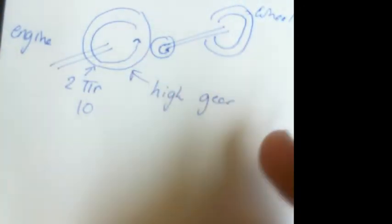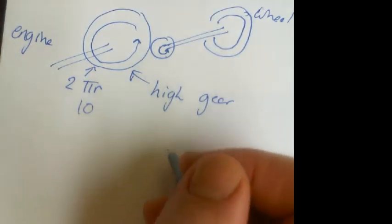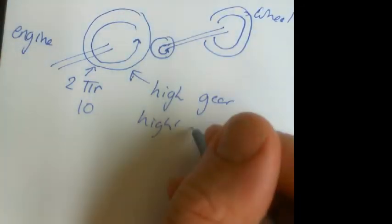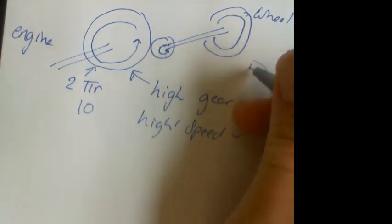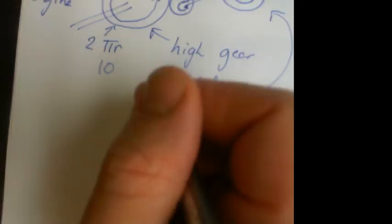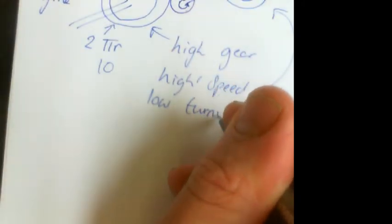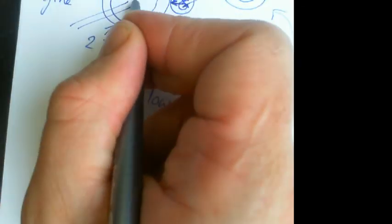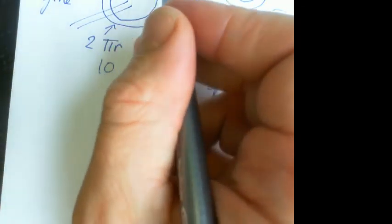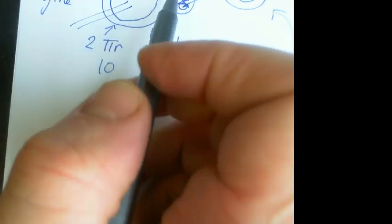In high gear you have a high speed, because the wheels go around fast. But you have a low turning effect, and that's because the distance from the pivot here — the radius — is smaller. This radius is much bigger than this radius. Force times distance: you're applying your force at the distance from the shaft, so the big cog has a bigger turning effect, while the small cog applies force at a much smaller distance, giving a low turning effect.